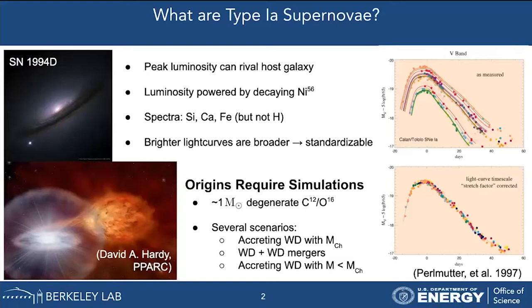I'm focusing in the first part of this talk on type 1a supernovae. Those are brilliant explosions — if you look at the top left of this slide, you see supernova 1994D along with its host galaxy. The supernova is the bright white spot in the lower left of that image. During the peak luminosity of a type 1a supernova, the luminosity rivals that of the entire host galaxy. You can see them from very far away in distant galaxies, and they're useful for measuring distances to far-away galaxies.